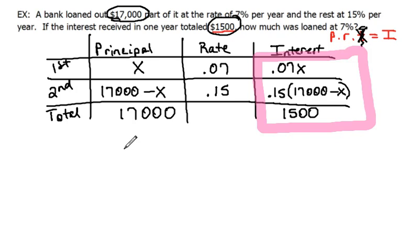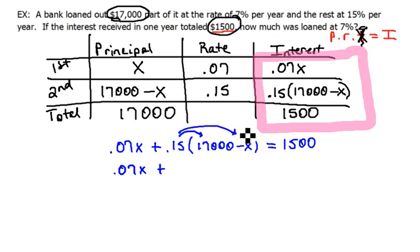So we just now have to set up our equation, which would be point zero seven X plus point one five times seventeen thousand minus X equals fifteen hundred. Now it's just a matter of solving. So we would have point oh seven X plus we're going to distribute our point one five. Point one five times seventeen thousand would be twenty five fifty. Point one five times negative X would be minus point one five X equals fifteen hundred.